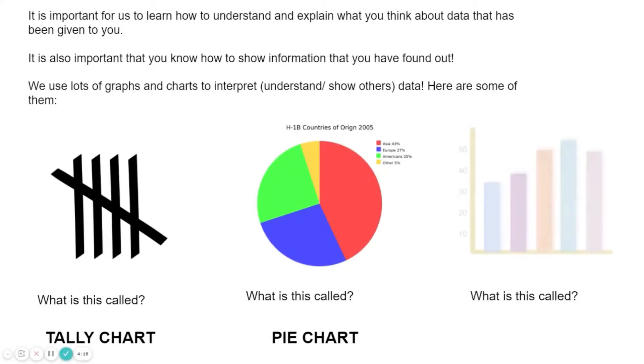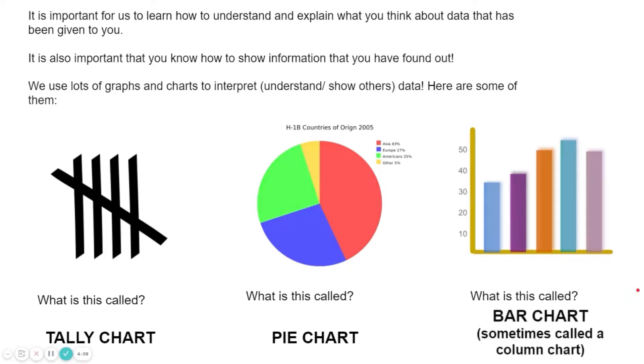And what is this one called? This one is called a bar chart and the tally chart helps us build the pie chart and a bar chart. A bar chart is similar to a pie chart, but it's obviously a different shape. The data is shown in bars going upwards.